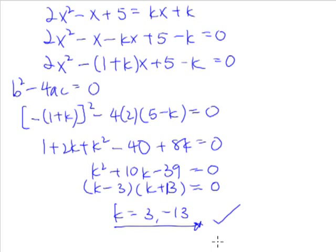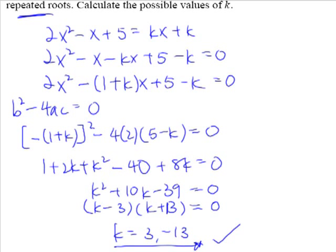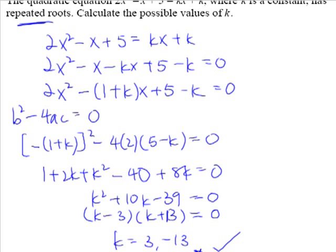But what is a little bit more important is that you have to understand what you have just done. You have just found out that when k = 3 or when you substitute k = 3 into this quadratic equation and work out b² - 4ac, you will get 0. Likewise, if you put in k = -13 and work out b² - 4ac, you will get 0 as well. For any other k values, like k = 1 or k = 0, you will not get b² - 4ac equal to 0. Only when k equals 3 or -13 will you get repeated roots for your quadratic equation.